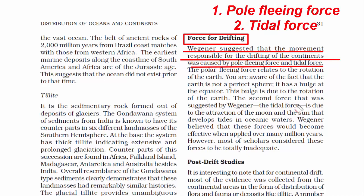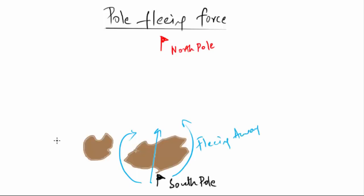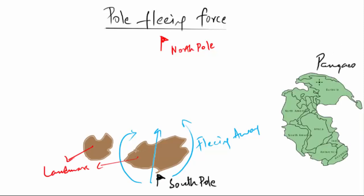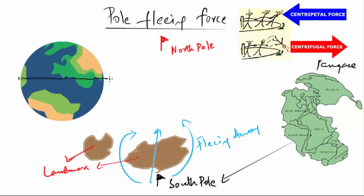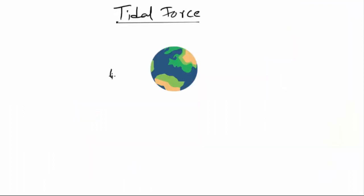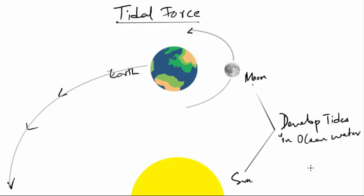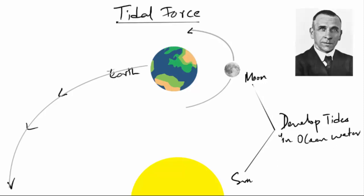Pole Fleeing Force refers to the landmass fleeing away or running away from the pole. In this case, we are talking about the landmass fleeing away from the South Pole. It was considered that Pangaea originated near the South Pole and the Earth's centrifugal forces caused Pangaea to break apart, with the resultant continents drifting towards the equator. The second force suggested by Wegener was the Tidal Force, due to the attraction of the Moon and the Sun that develops tides in oceanic water.